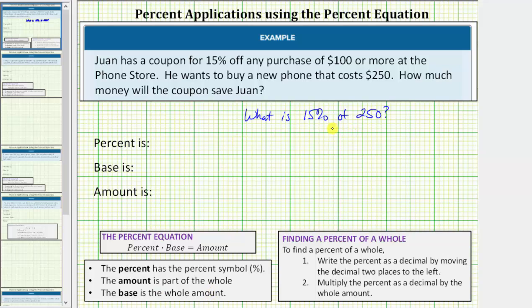So for this situation, the percent is 15%. Because we're looking for 15% of 250, or part of 250, the base or whole amount is the 250, and the amount is the unknown. Let's use the variable a to represent the amount. So now if we write the percent equation, which is percent times base equals amount, we get 15% times the base of 250 equals the amount a.